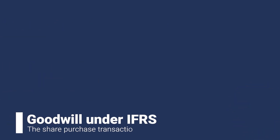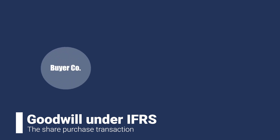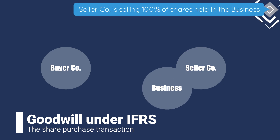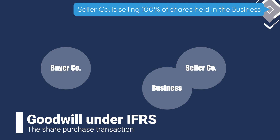In a common share purchase transaction where goodwill can be recognized, there are normally three parties involved. The first one is the buyer, the second one is the seller, and the third one is the business whose ownership is being bought or sold. In this transaction, we are assuming that control is being transferred and that the sale is of 100% of the shares of the business.